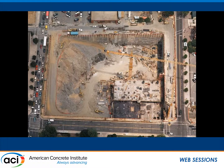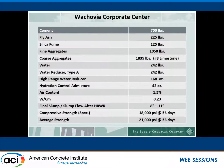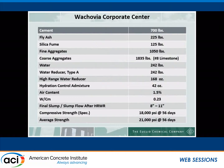Here are pictures of the job site and the Wachovia mix design: 700 pounds of cement, 225 pounds of fly ash and silica fume, fine aggregate, coarse aggregate, a water-to-cement ratio of 0.23, and an average of 21,000 PSI was obtained at 56 days.